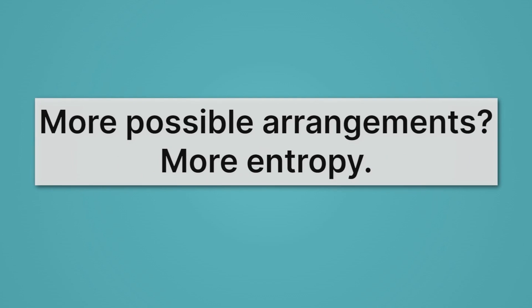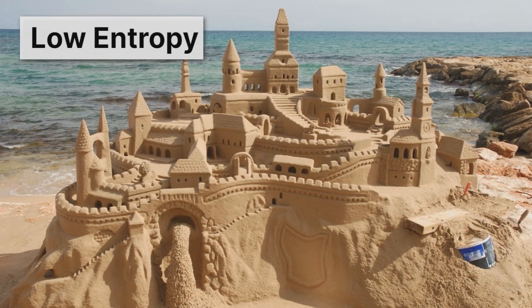What exactly do I mean there? Well, let's go back to our castle. This is a very specific arrangement. If I move things, I no longer have my same castle — I've destroyed my castle. And so we say this is low entropy.